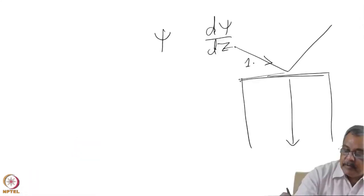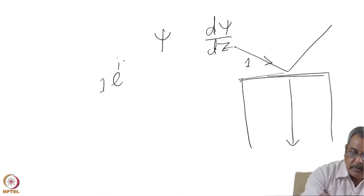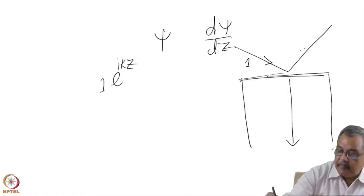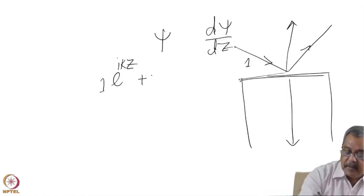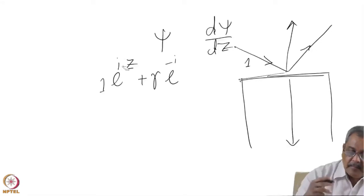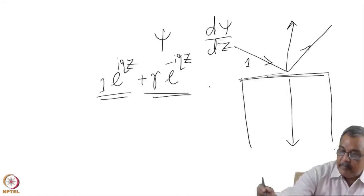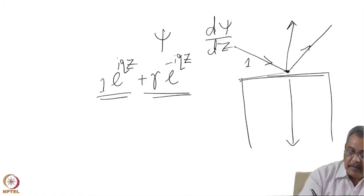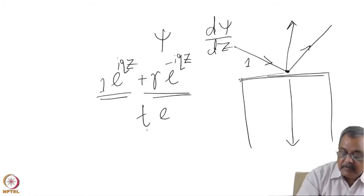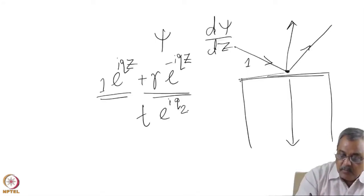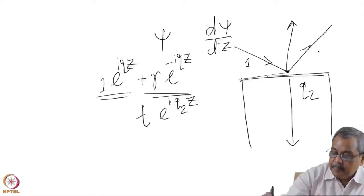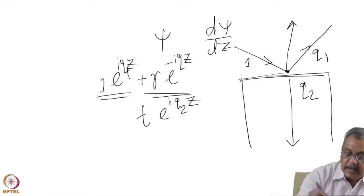If the incident beam is of unit amplitude e to the power i·kz, then the reflected beam, since it is going in the opposite direction in qz, becomes r·e to the power minus i·qz. This is the forward-moving part; this is the reflected part with the phase factor brought back to the interface. The transmitted part is the transmission coefficient t times e to the power i·q2z, where q2 is the wave vector transfer in the medium and q1 is outside the medium.